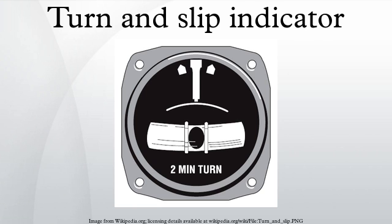In contrast to the turn and slip indicator, the turn coordinator's gimbal is pitched up 30 degrees from the lateral axis, causing the instrument to respond to roll as well as yaw. This allows the instrument to display a change more quickly, as it will react to the change in roll before the aircraft has even begun to yaw. Although this instrument reacts to changes in the aircraft's roll, it does not display the roll attitude. The turn coordinator may be used as a performance instrument when the attitude indicator has failed — this is called partial panel operations.